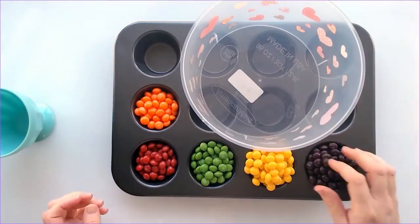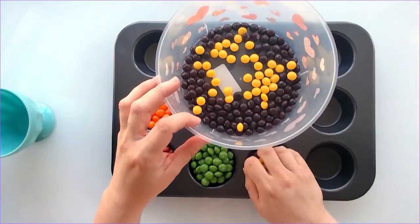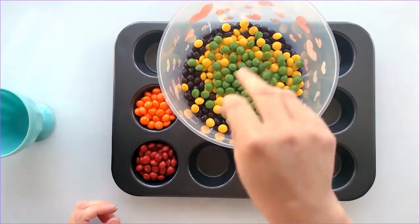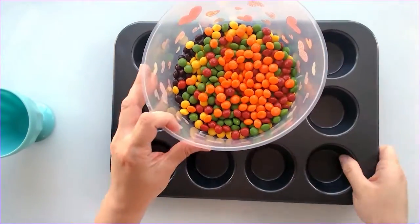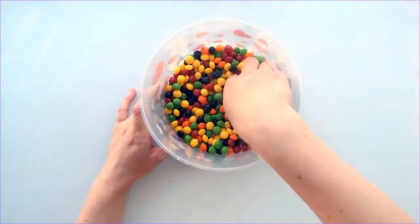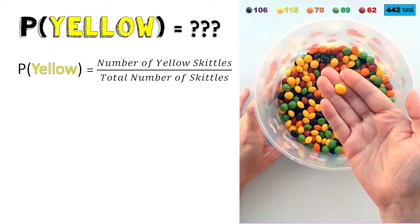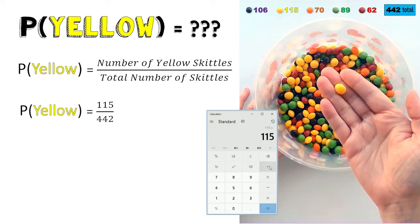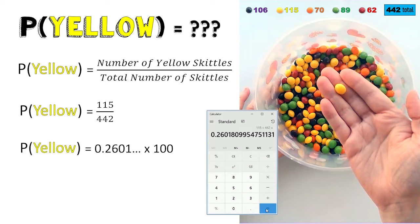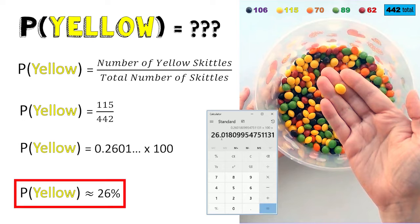I am going to place all the Skittles in a bowl and calculate the probability of randomly choosing a certain color. For the first problem, we are going to look at the probability of randomly choosing a yellow Skittle. We would need to take the number of yellow Skittles and divide it by the total number of Skittles. I will use a calculator to determine the percent — I will divide 115 by 442, then multiply the decimal by 100. This means that I have approximately a 26% chance of randomly choosing a yellow Skittle.